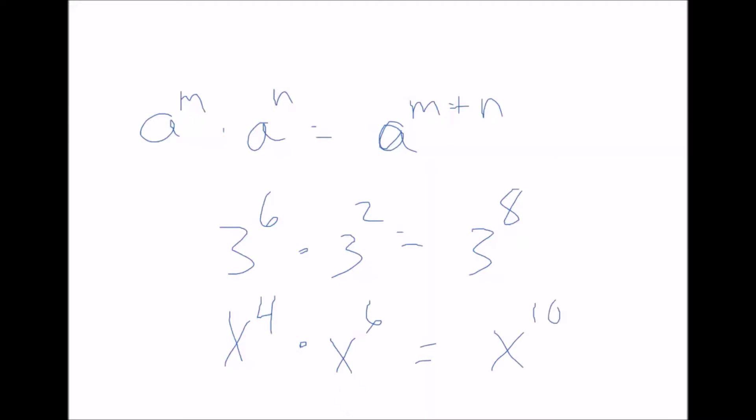So when you multiply two like bases together, like a times a or x times x, you will add up the exponents.